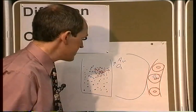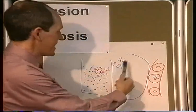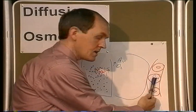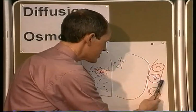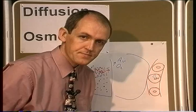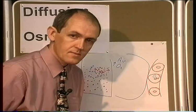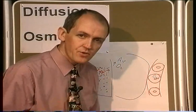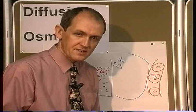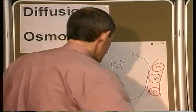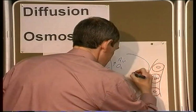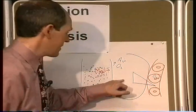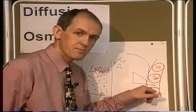We've got more oxygen in the alveoli than in the capillary. The concentrations are unequal — there's more here than here. And this means we've got what is called a diffusion gradient. The concentration of oxygen is greater in the alveoli than it is in the capillary.